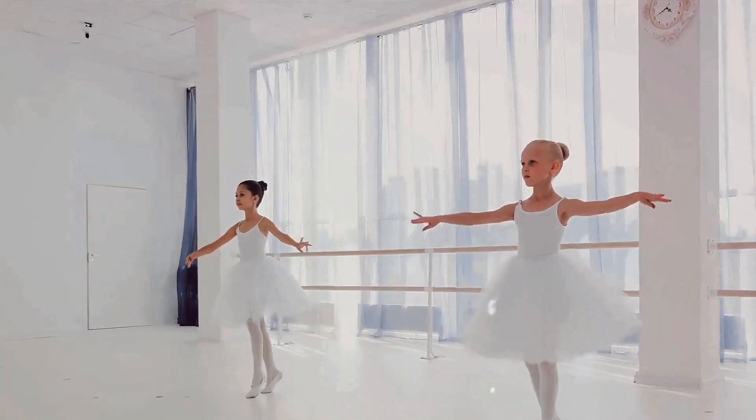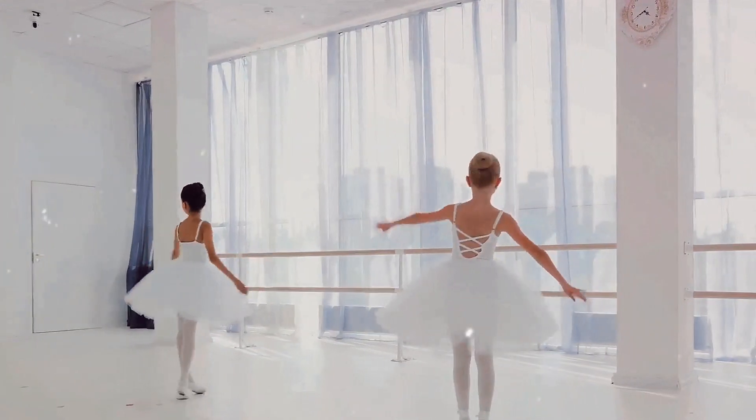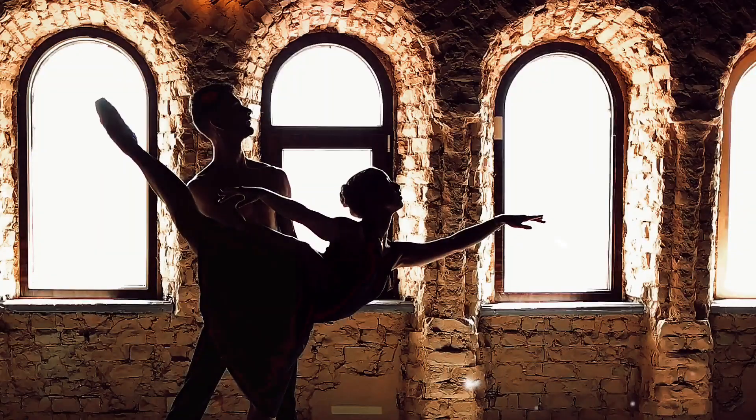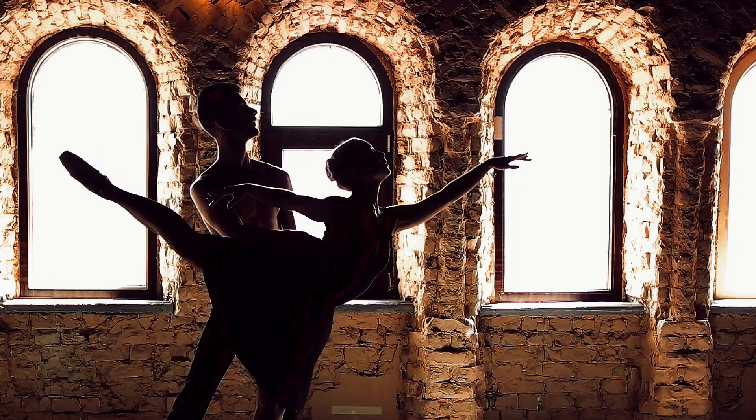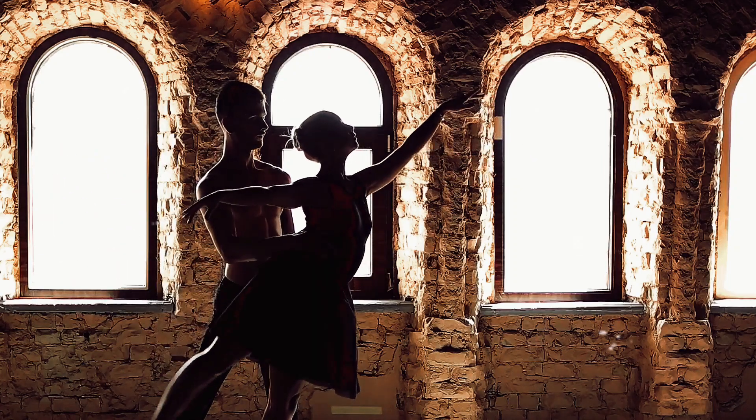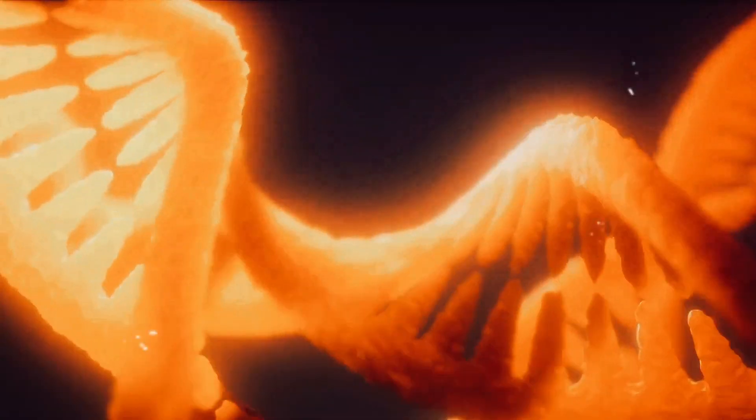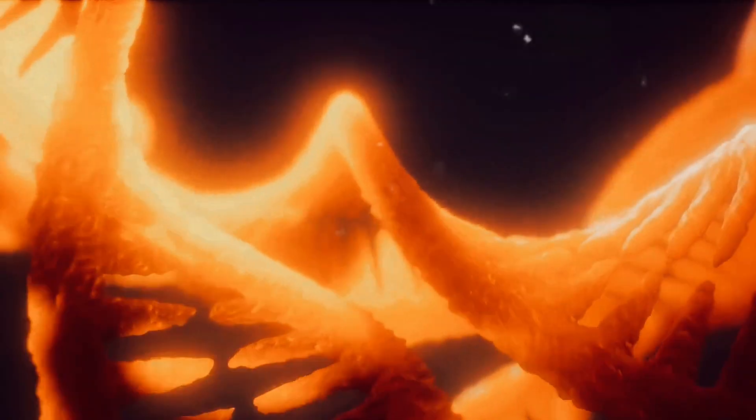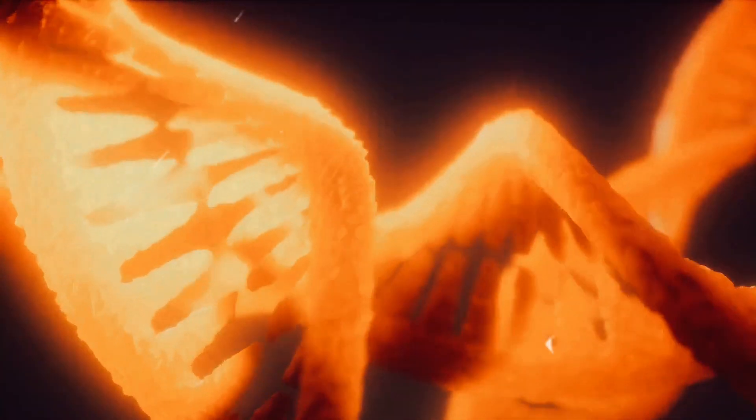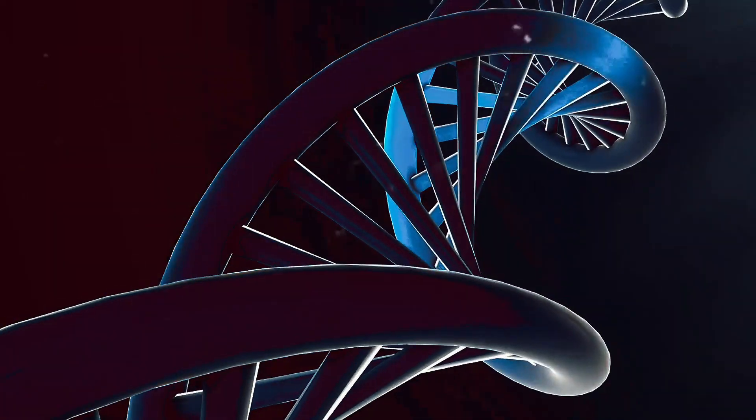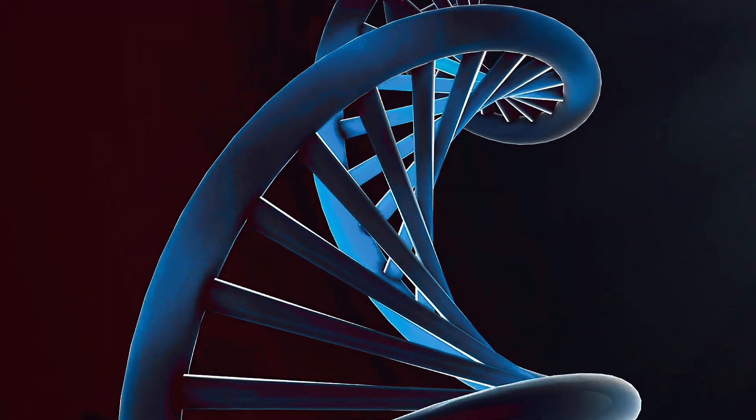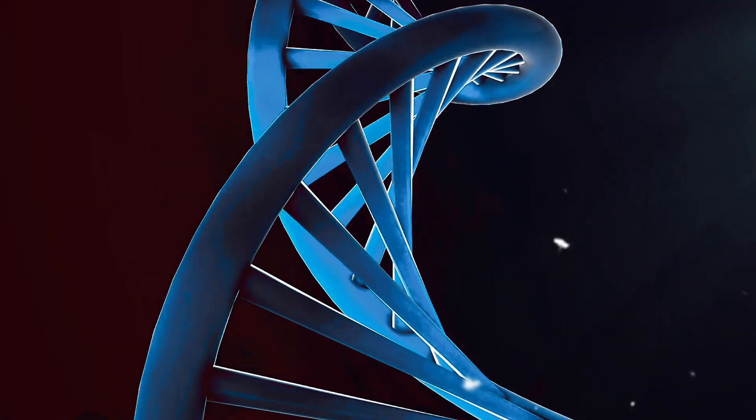This process is akin to a delicate dance where precision is key. Now, the nucleus, the control center of the cell containing the genetic material, is delicately inserted into the egg cell. This is a pivotal moment in the cloning process. The nucleus from the donor cell is now in a new environment, ready to dictate the development of a new organism. But how does this cell know to start dividing and growing? Well, that's where activation comes in.